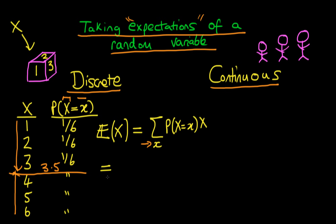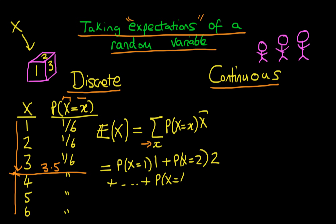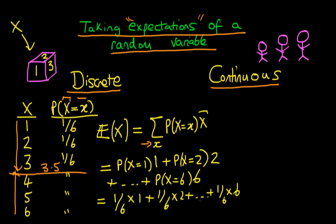How do we find this value of 3.5 using the mathematical formula? Applying the formula: the first term is the probability that X equals 1, multiplied by 1. The second term is the probability that X equals 2, multiplied by 2, continuing all the way up to the probability that X equals 6, times 6. Since all probabilities are 1/6, this gives us (1/6)×1 + (1/6)×2 + (1/6)×3 + ... + (1/6)×6, which adds up to 21/6.